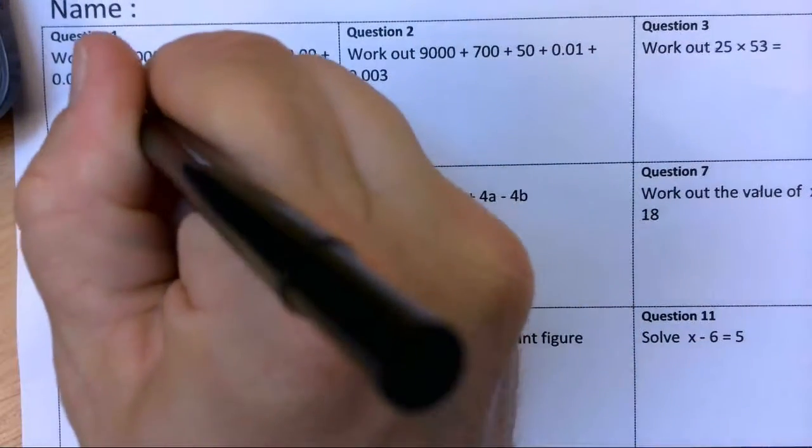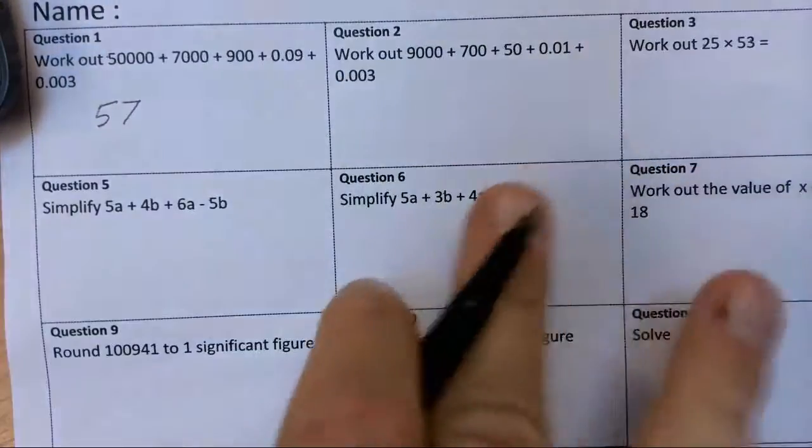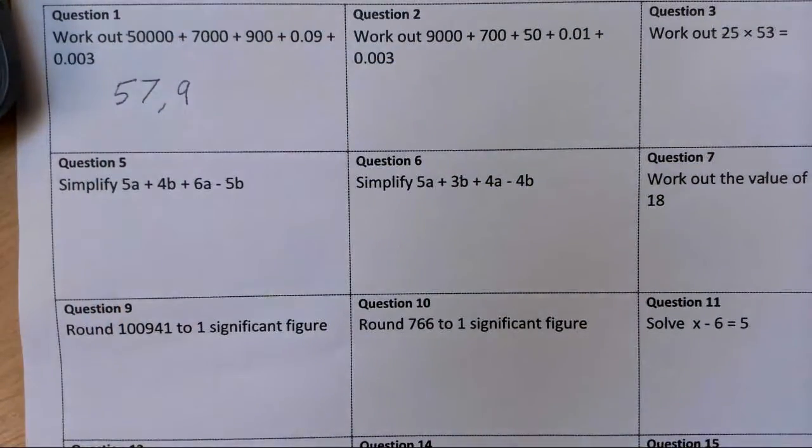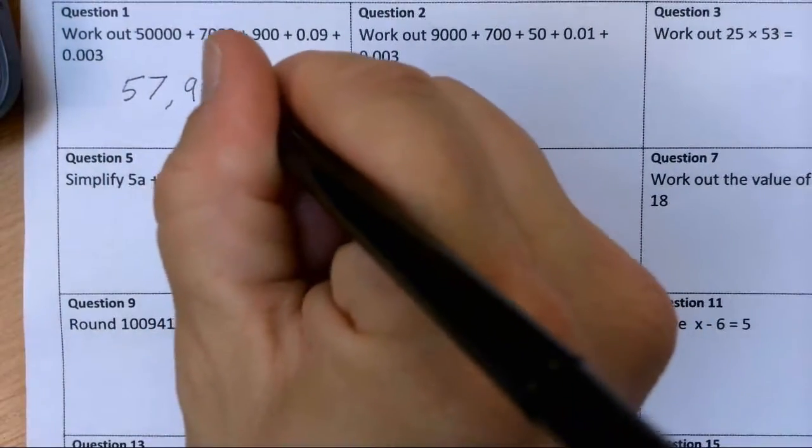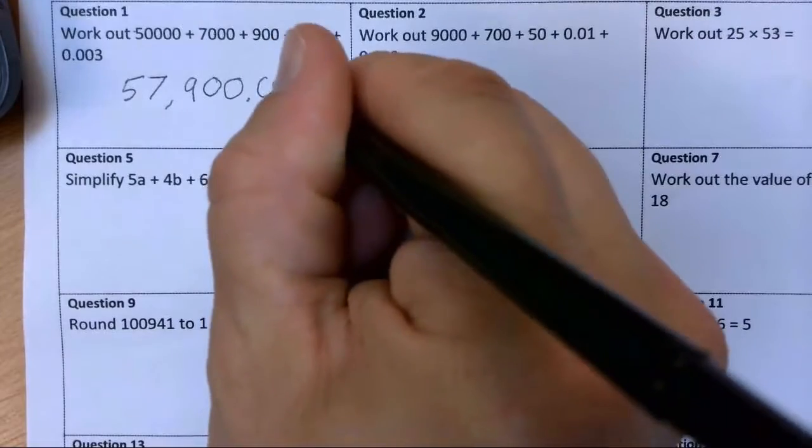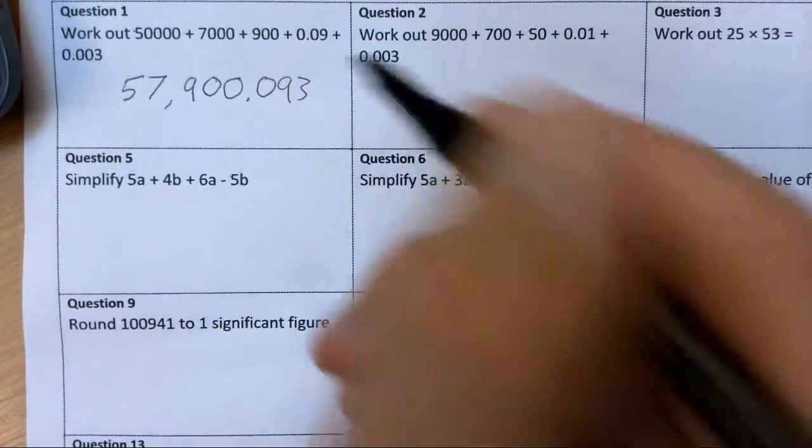50,000 plus 7,000. So if I've got 50,000 and then 7,000, then 900, that's the hundreds column. Now, no tens, no units, no tenths, nine hundredths, three thousandths.